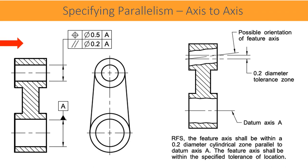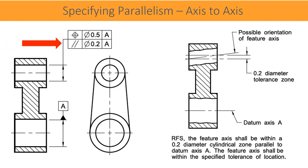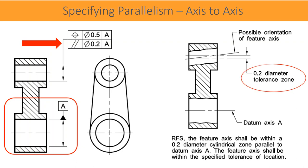In this given drawing, parallelism of a cylinder is specified with the datum feature — the datum feature is also a cylinder. The feature axis should be within a 0.2 mm diameter cylindrical zone, parallel to datum axis A.